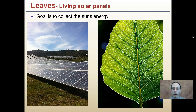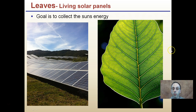Starting with the basics: leaves are like living solar panels and the goal is to collect the sun's energy. Our solar panels are all through the field here, so the leaves' goal is to collect and absorb as much of that sun energy as possible so that the plant can efficiently carry out the conversion of this light energy to sugars.